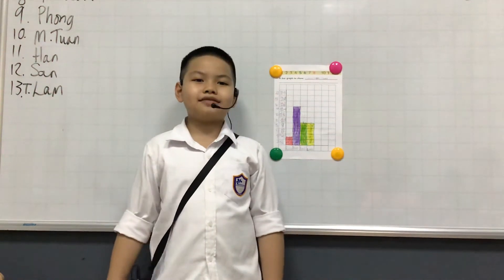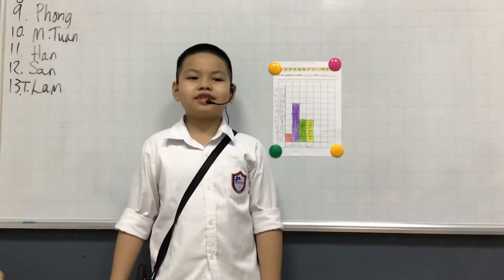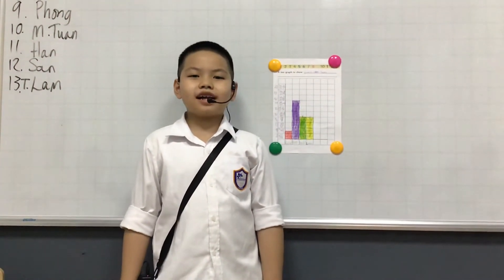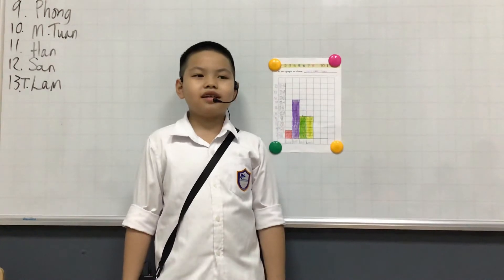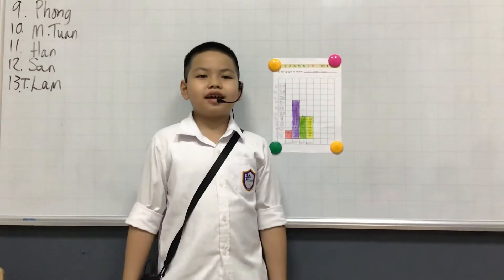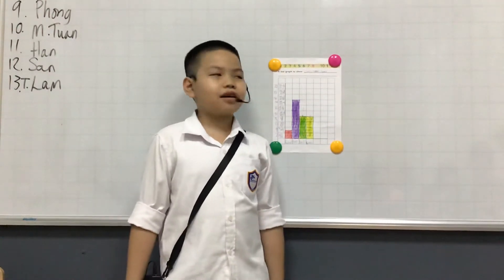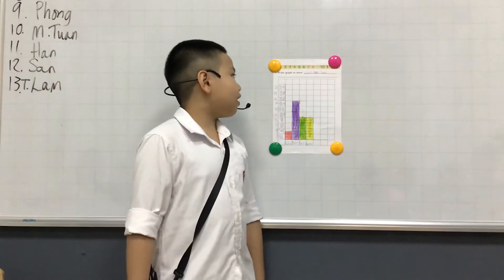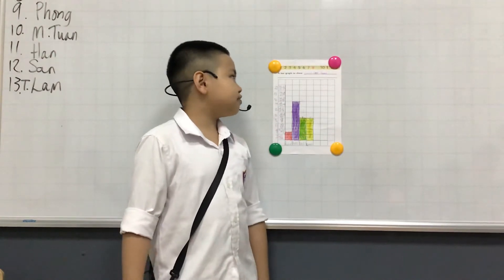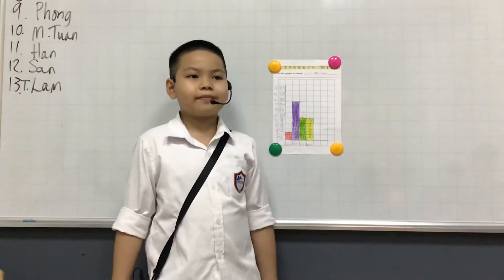Hello everyone, my name is Ongba, I'm 7 years old, and my class is 1B. Today, I will talk about cross-section classroom items.